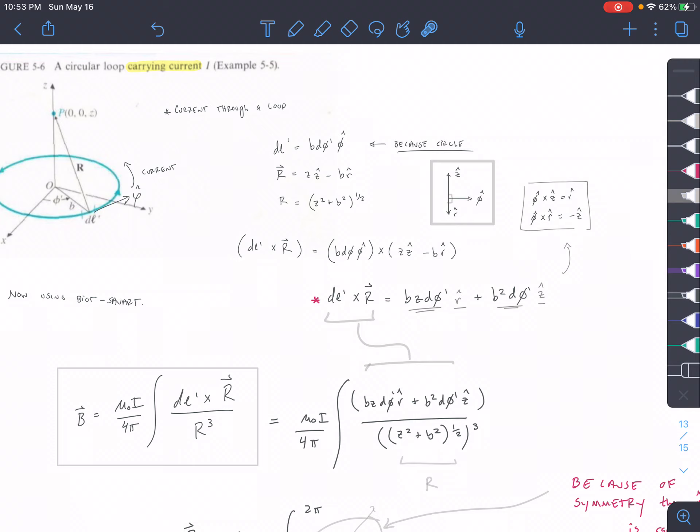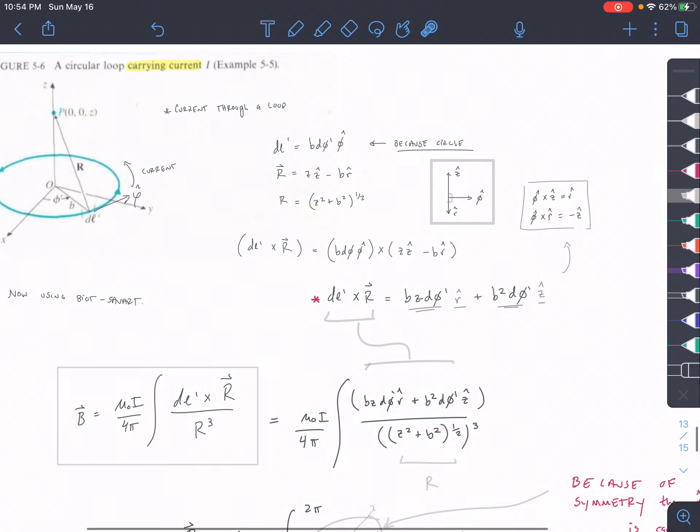So we plug in our R here. So B d-phi Z in the R-hat direction, and then B d-phi B here in the Z direction. Because we have a negative Z, so this changes our negative for this part.